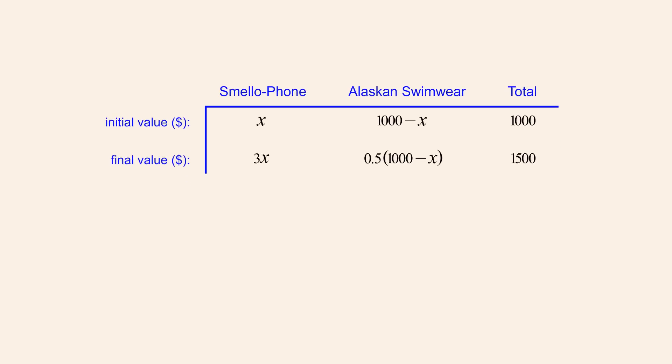We can now create an equation which states that the final value of the Smellophone investment, plus the final value of the Alaskan Swimwear investment, is equal to the final value of Adrian's total portfolio. To simplify this equation, we can use the distributive property to distribute the 0.5 multiplier to the two terms in parentheses. And completing the multiplication, 0.5 times 1000 is 500.